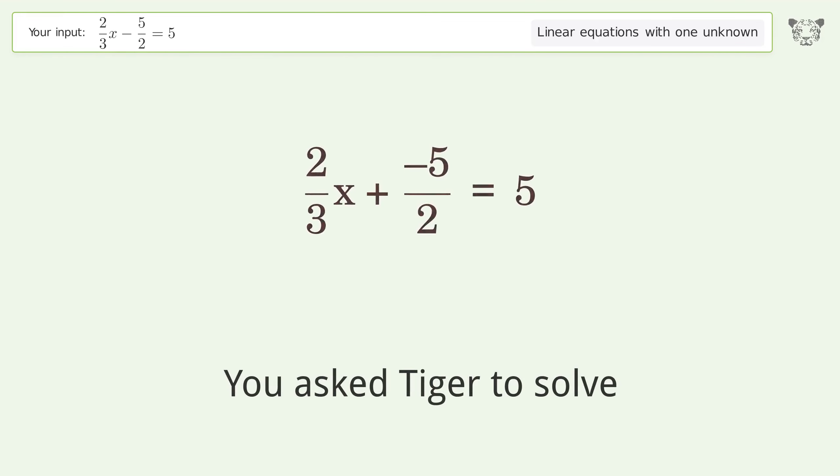You asked Tiger to solve this linear equation with one unknown. The final result is x equals 45 over 4.